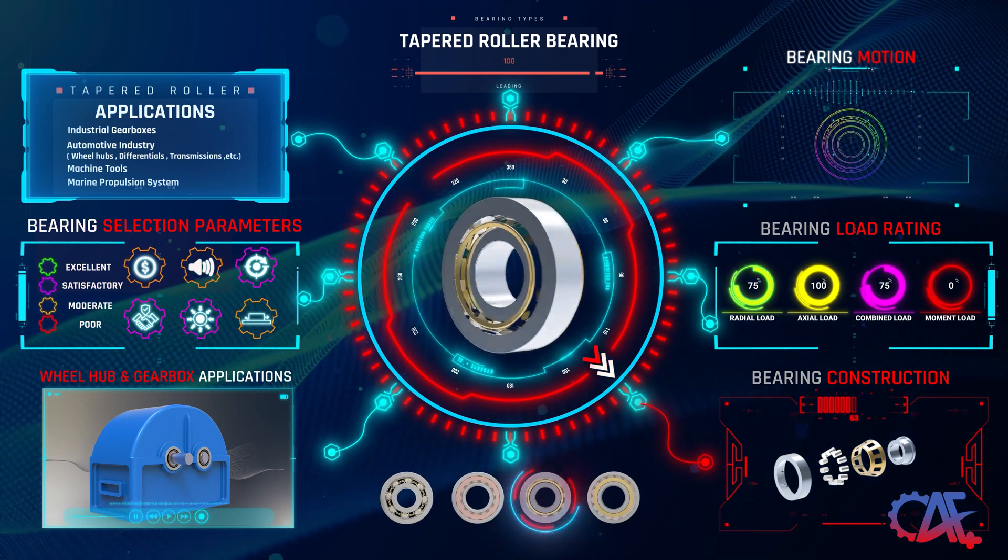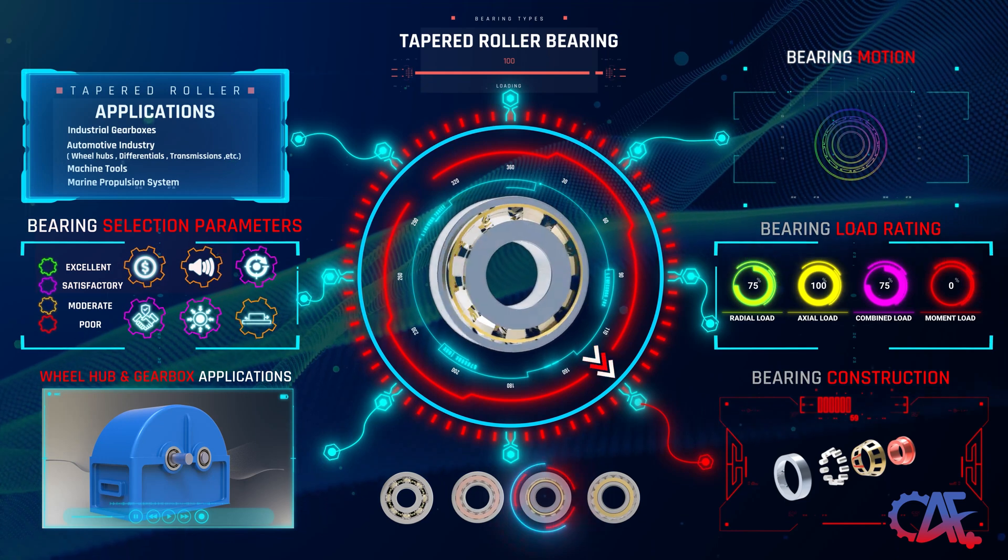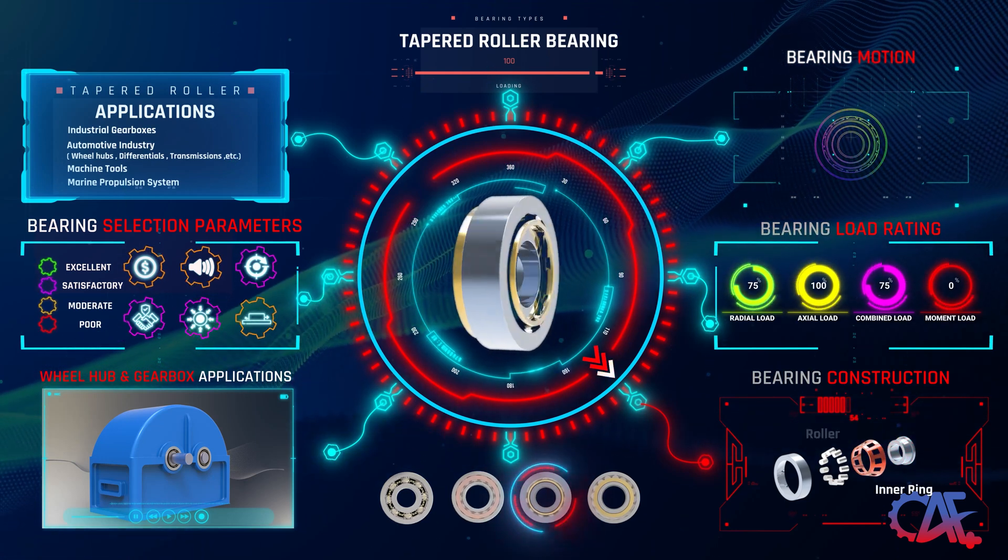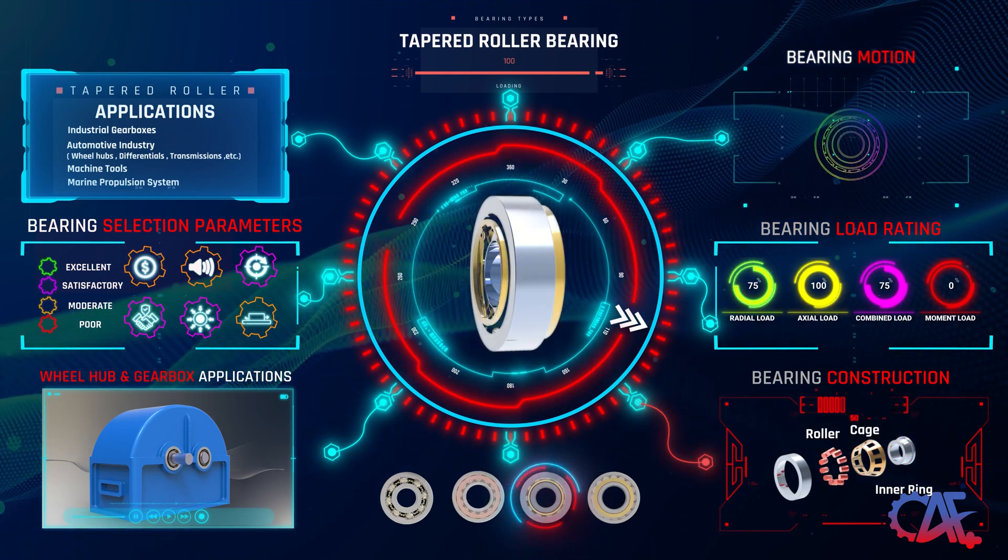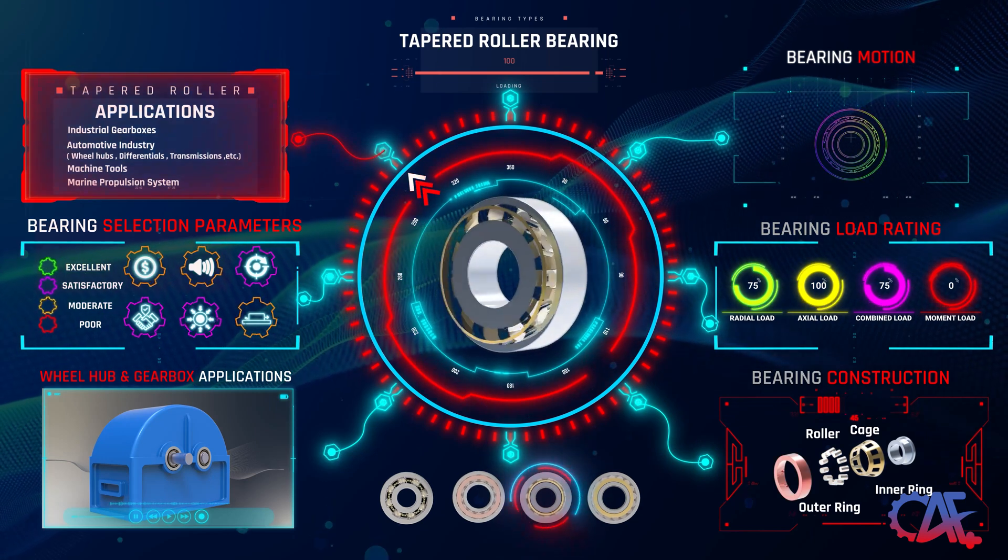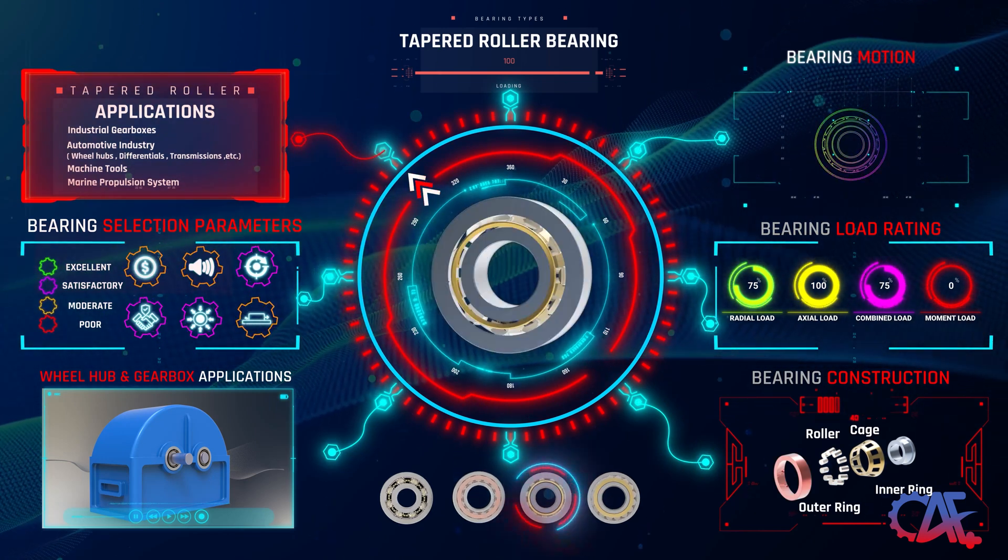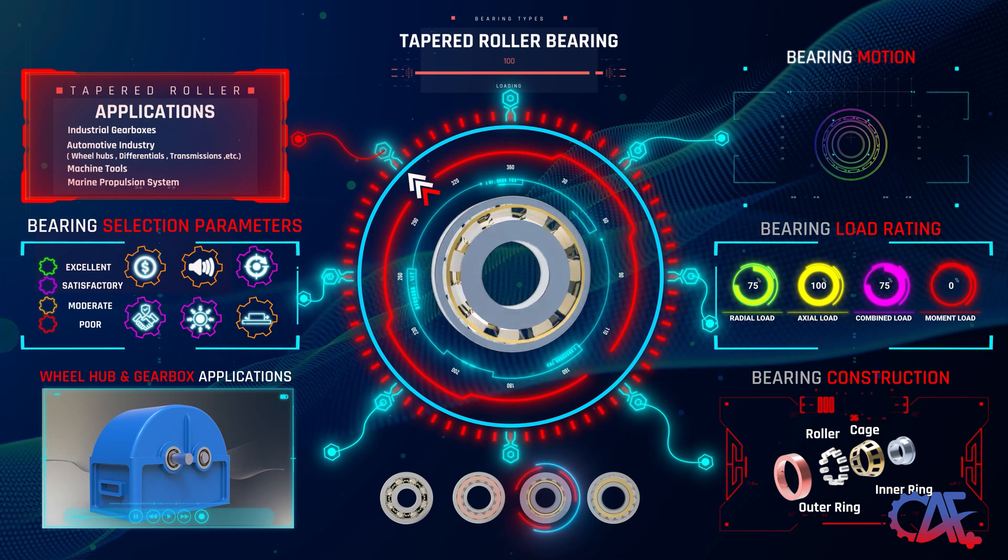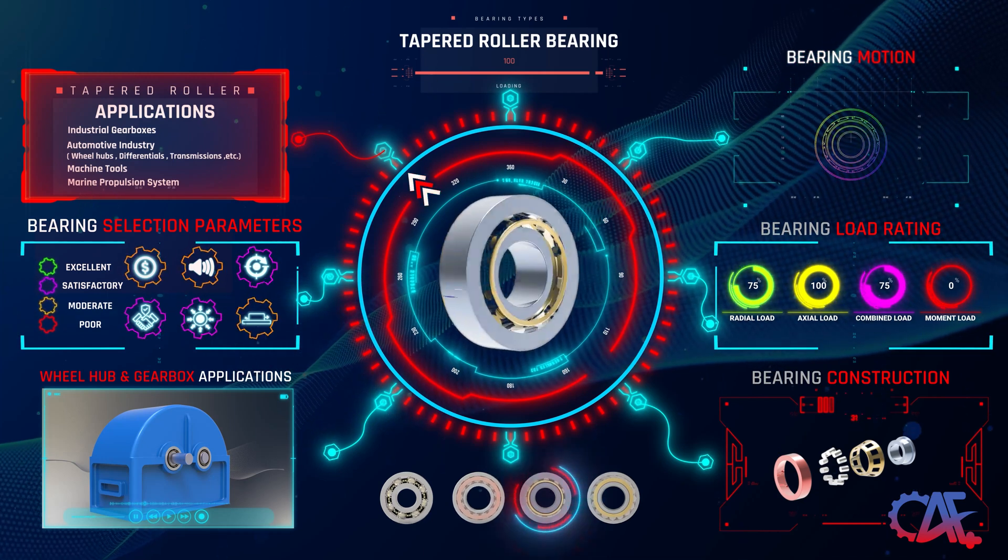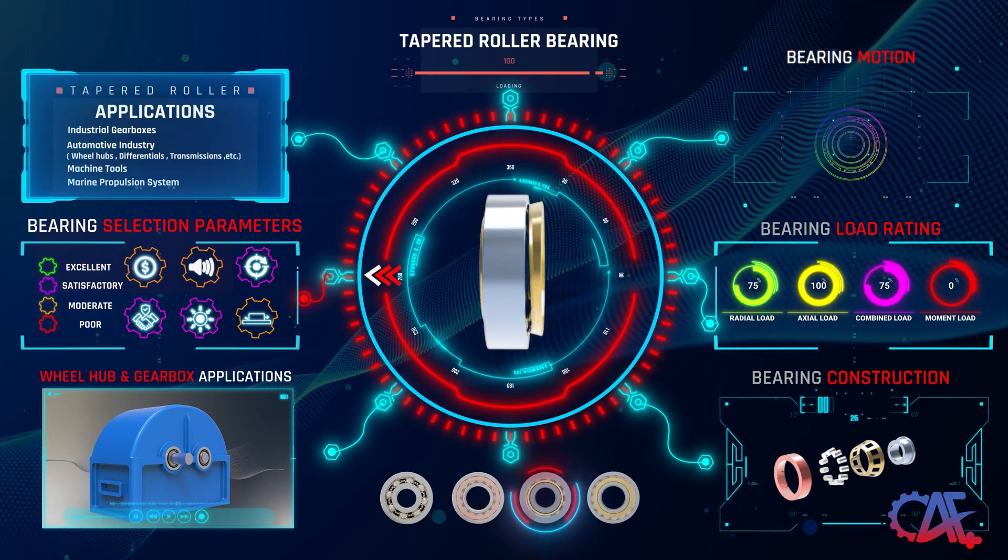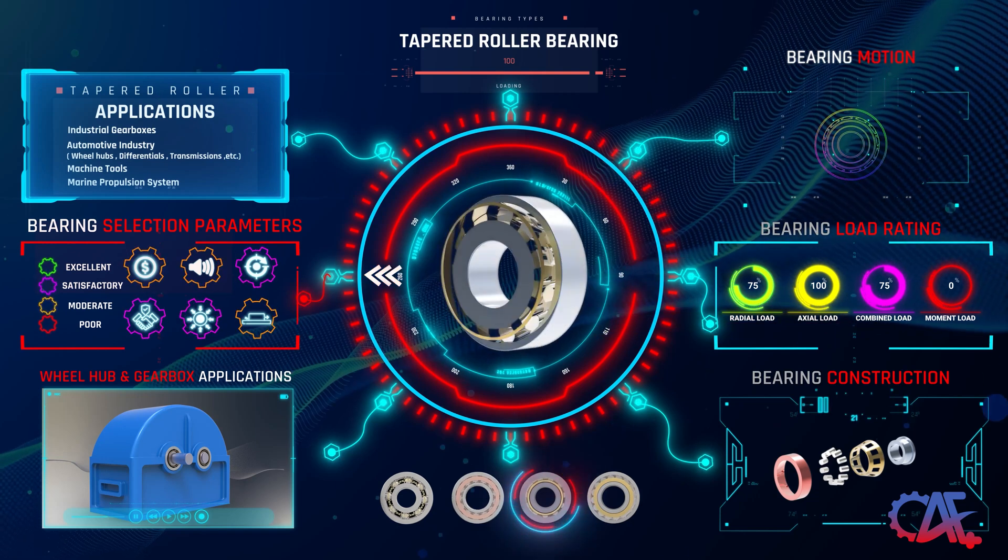These bearings are made up of two distinct components known as the cup and cone. The cone comprises tapered rollers, a cage, and an inner ring, while the cup functions as the outer ring. These bearings are utilized in various applications, including industrial gearboxes, wheel hubs, machine tools, and marine propulsion systems.